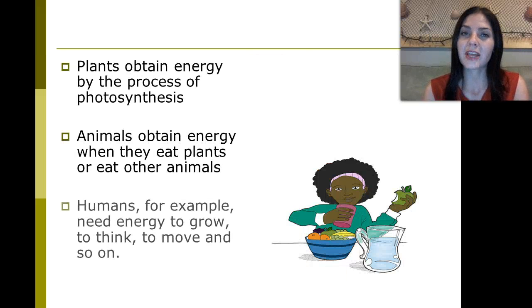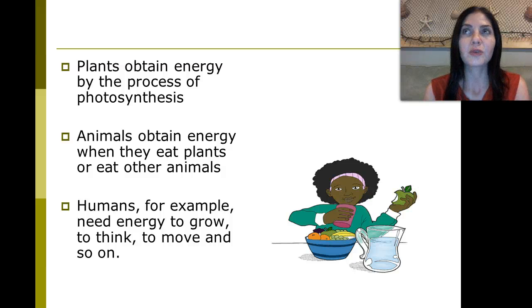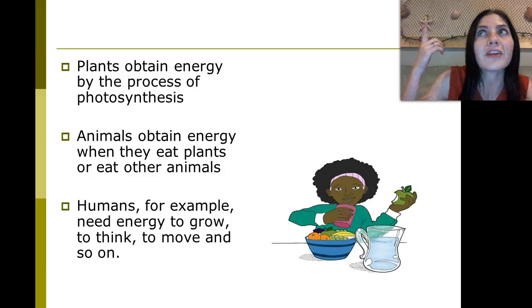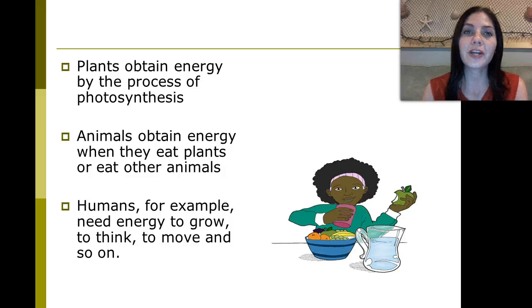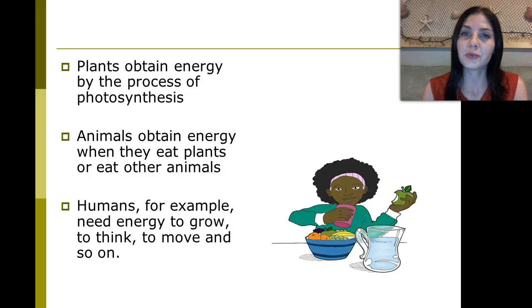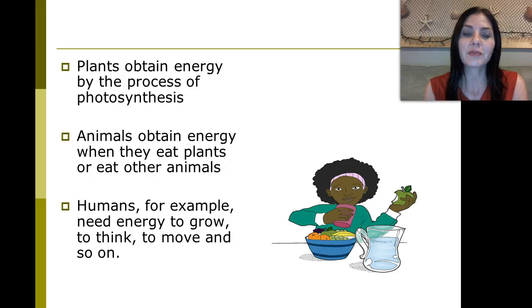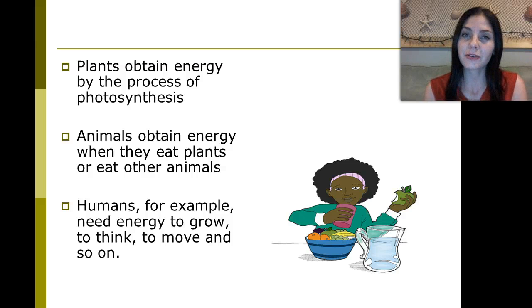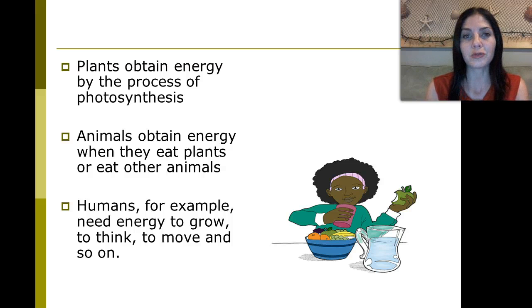Plants obtain their energy through the process of photosynthesis, which uses the light from the sun in a reaction to produce glucose and energy. Animals obtain energy when they eat plants or other animals. And humans, for example, need energy to grow, to think, and to move.